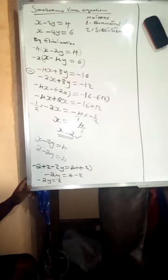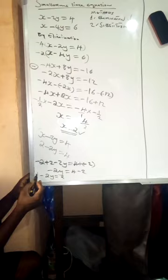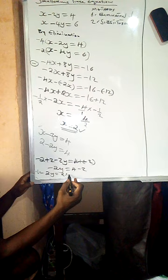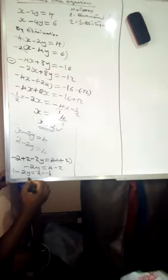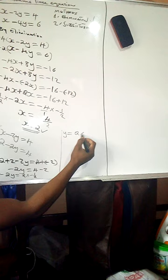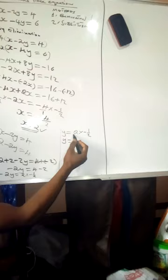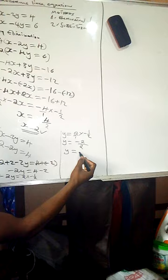Now we want to find the y variable. We multiply both sides by the multiplicative inverse of negative 2, which is negative one-half. On the left, negative one-half times negative 2 gives 1, so we have y. On the right, 2 times negative one-half: the numerators give 2 times negative 1 equals negative 2, over 1 times 2 equals 2, so y equals negative 2 over 2, which is negative 1. Therefore y equals negative 1.